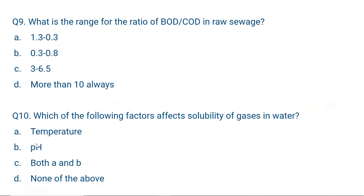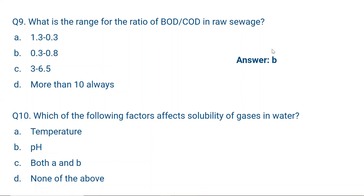Question number nine: What is the range for the ratio of BOD to COD in raw sewage? The answer is B — 0.3 to 0.8. BOD is always less than COD. The correct answer is B.